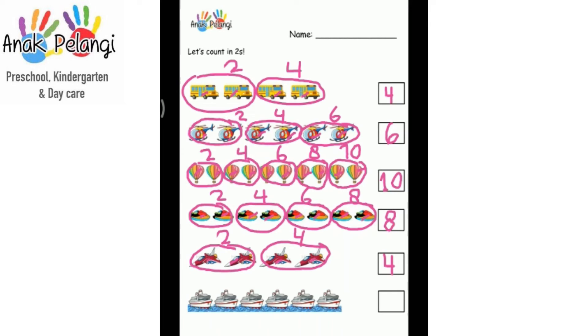Now the ships. Circle the ships in twos. Count them in twos. One, two. Three, four. Five, six. Two, four, six. How many boats, I mean, how many ships are there? There are six. Write six in the box.